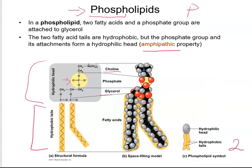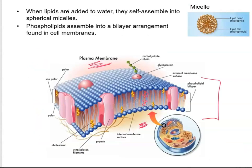Because phospholipids have two regions — a hydrophobic region and a hydrophilic region — we call phospholipids amphipathic. If you look at a protein embedded in the membrane, part of it is hanging out with the heads and part of it is hanging out with the tails. So that tells you this protein can also be amphipathic.